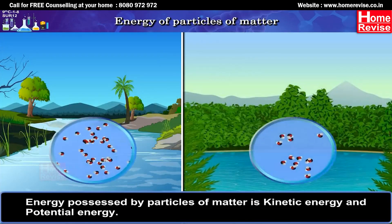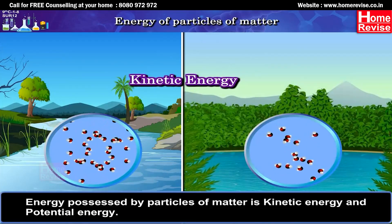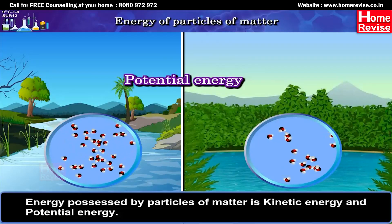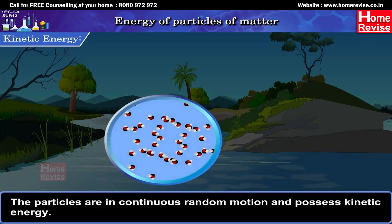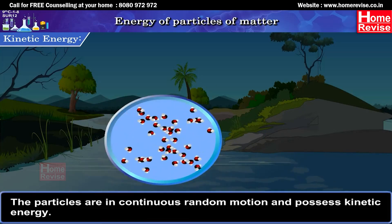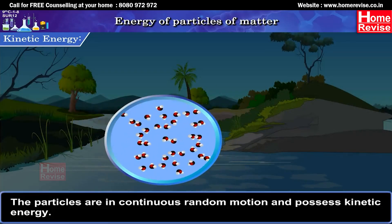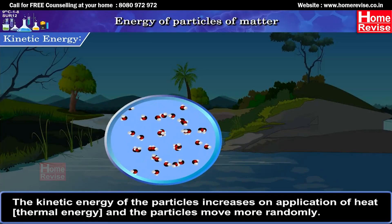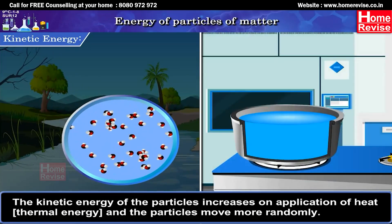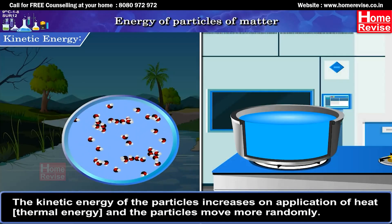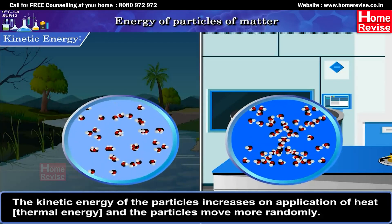Energy of particles of matter: Energy possessed by particles of matter is kinetic energy and potential energy. Kinetic energy: The particles are in continuous random motion and possess kinetic energy. The kinetic energy of the particles increases on application of heat, i.e. thermal energy, and the particles move more randomly.